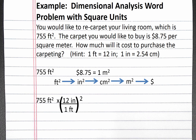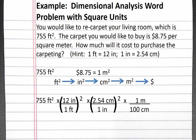We do the same when converting from square inches to square centimeters. 1 inch is 2.54 centimeters, and we need to square our conversion factor to get into centimeters squared. We then convert from centimeters to meters using 100 centimeters equals 1 meter, and we square this conversion factor as well to get into square meters.